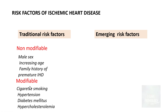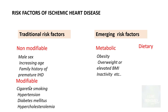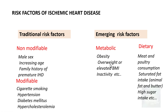Moving on to emerging risk factors, these are again subcategorized into metabolic causes and dietary causes. The metabolic causes include obesity, overweight or elevated body mass index, and being inactive for longer durations. The dietary factors include consumption of meat and poultry, high saturated fat intake particularly animal fat and butter, and consumption of increased amounts of sugars. All these are emerging risk factors.